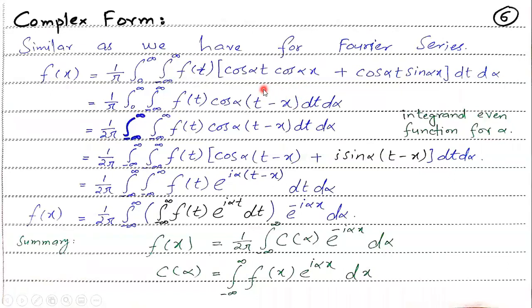This is the form you have to use trigonometric identity. You can convert this form to cos alpha times (t minus x) and this is the integrand. We have an even function. Even function of what? Even function with respect to alpha. If you put alpha negative and positive, then the cosine will absorb the negative sign.